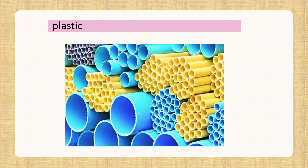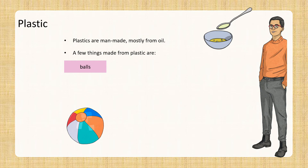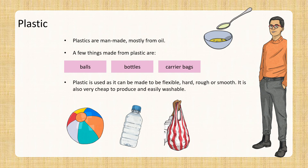Plastic is another everyday material that we commonly see. Most of your toys are also made of plastic. Plastics are man-made, mostly from oil. A few things made from plastic are balls, toys, bottles, and carrier bags. Plastic is used as it can be made to be flexible, hard, rough, or smooth. It can also be very cheap to produce and easily washable.